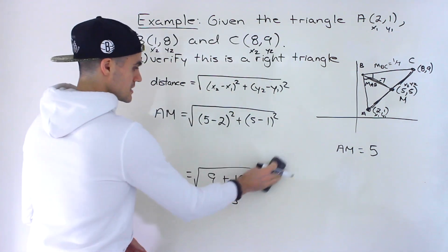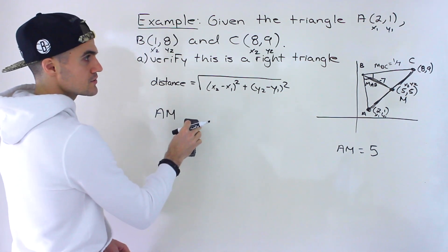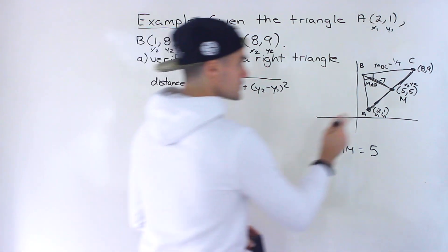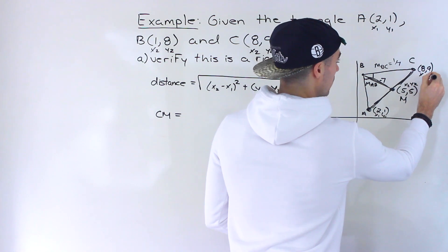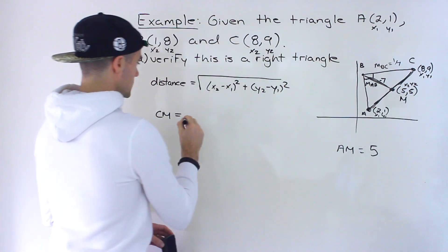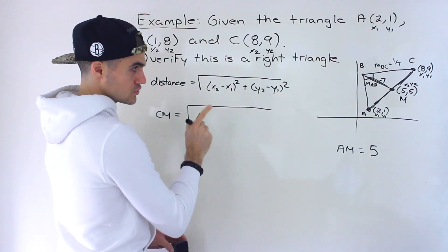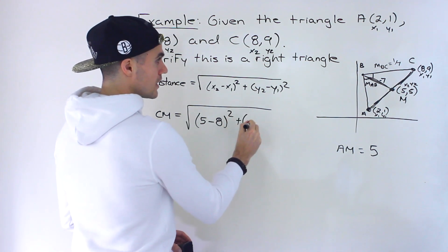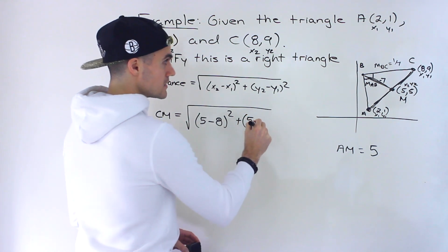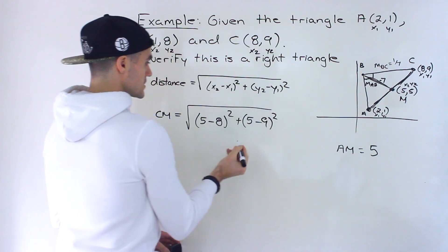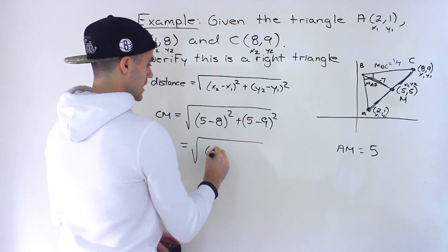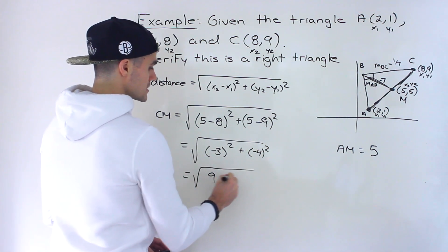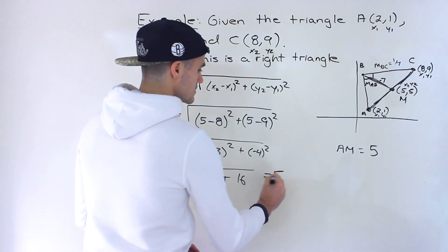Next, the distance from C(8,9) to M(5,5): √((5-8)² + (5-9)²) = √((-3)² + (-4)²) = √(9 + 16) = √25 = 5. So CM also equals 5, which is expected since M is the midpoint of AC — both half-lengths of the hypotenuse must be equal.